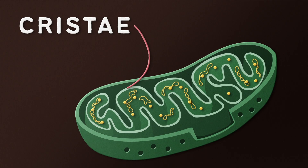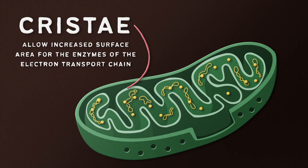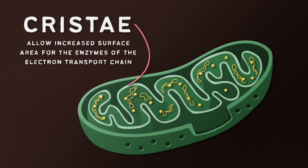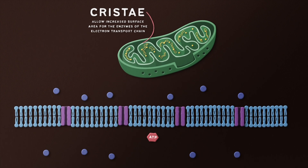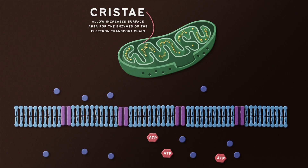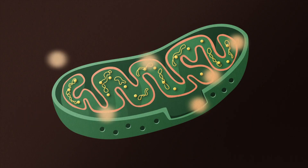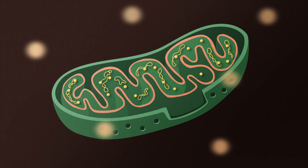This inner membrane is folded into the matrix in these wavy looking structures called cristae. By forming these pleated structures, cristae allow for increased surface area, which acts as free real estate for some very important residents — the enzymes of the electron transport chain. The more surface area, the more space there is for electron transport chain enzymes, which means the more ATP the mitochondria can produce through oxidative phosphorylation. In short, more wibbly wobbly folds mean more energy output for the cell.